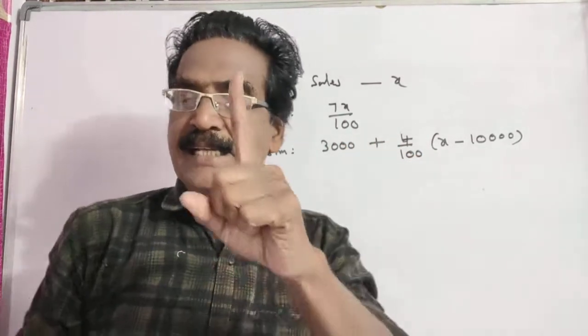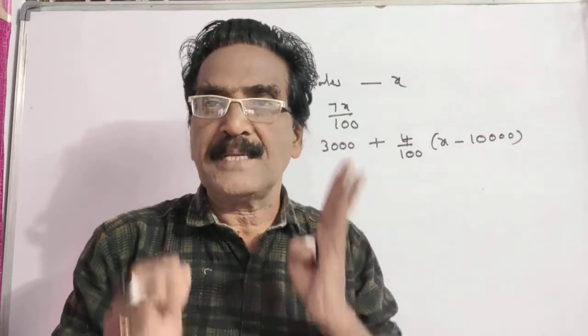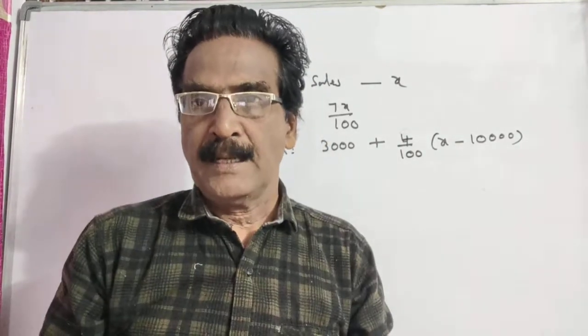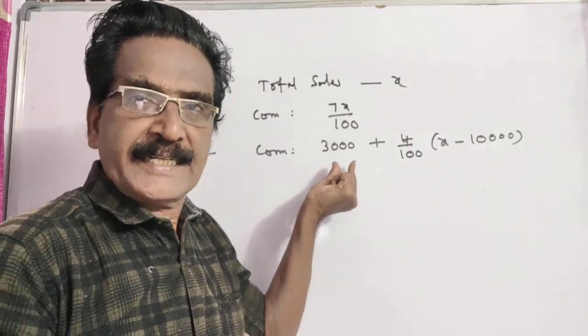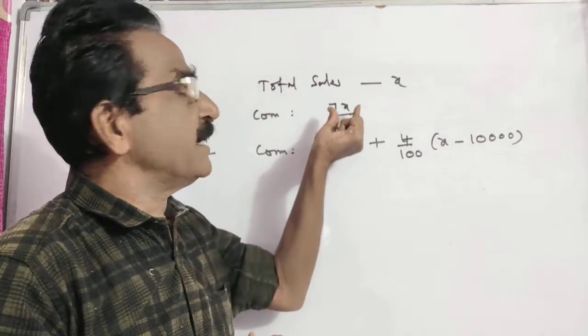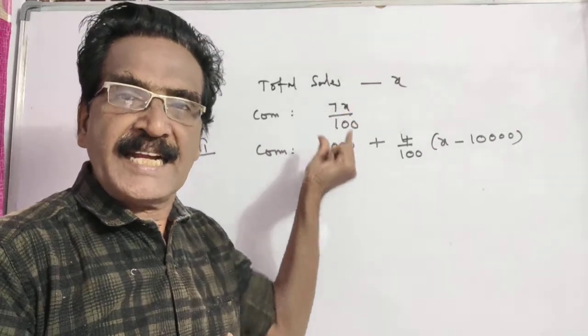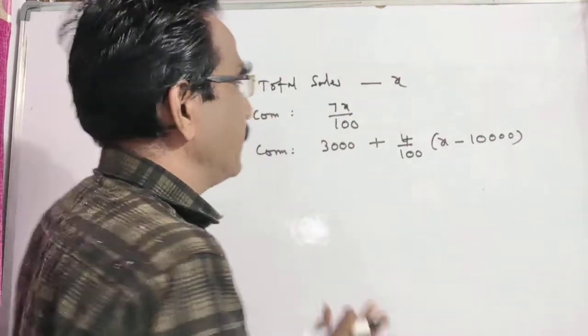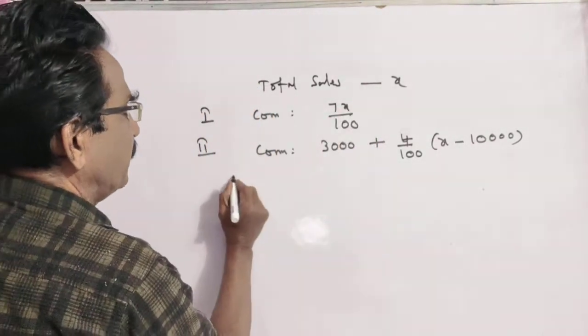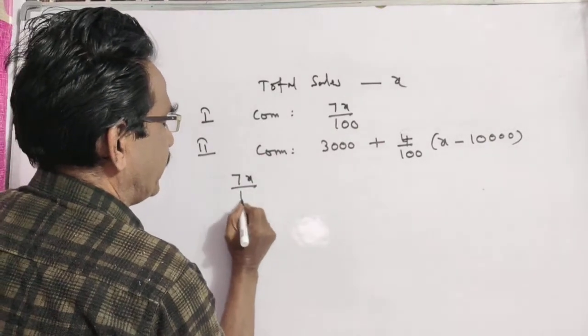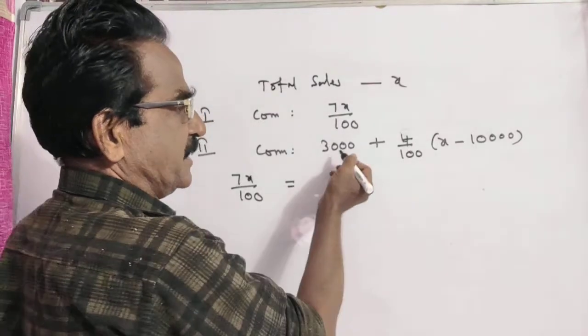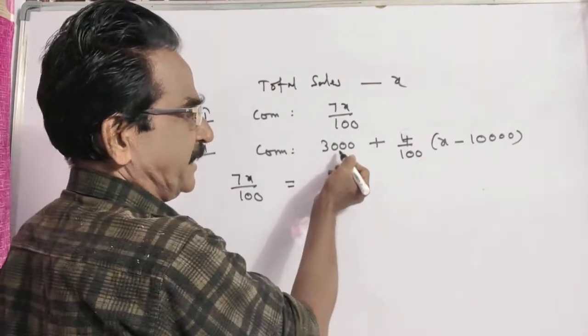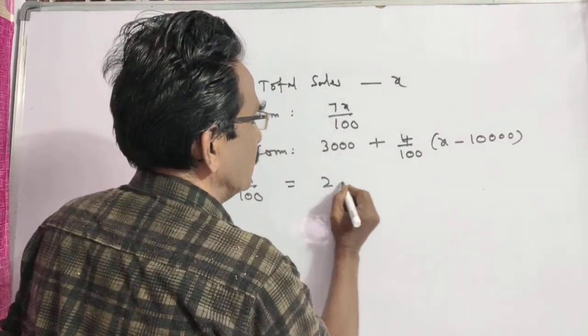In the second case, he gets a commission of Rs. 800 more. If that 800 is subtracted or deducted, then the commission in both the first case and the second case are equal. So now the commission in the first case, 7X by 100, is equal to commission in the second case. Let us subtract that 800 from 3000, which is 2200.